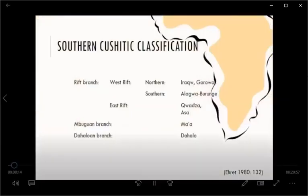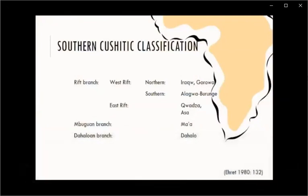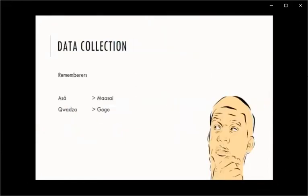This is Christopher Erit's classification of Southern Cushitic. As you can see, Eastrift consists of two languages, Asa and Kwadza, and these are both extinct languages for which data were collected when there were only rememberers of the language, not active speakers.